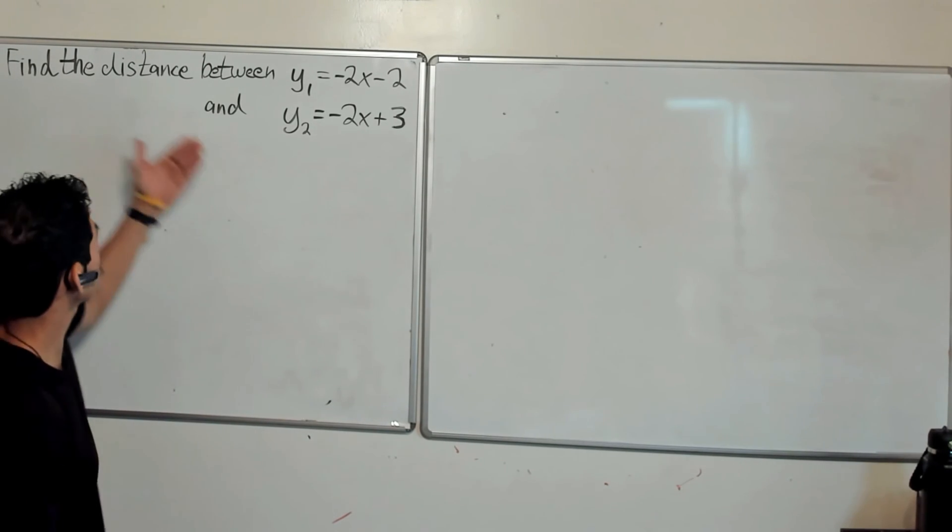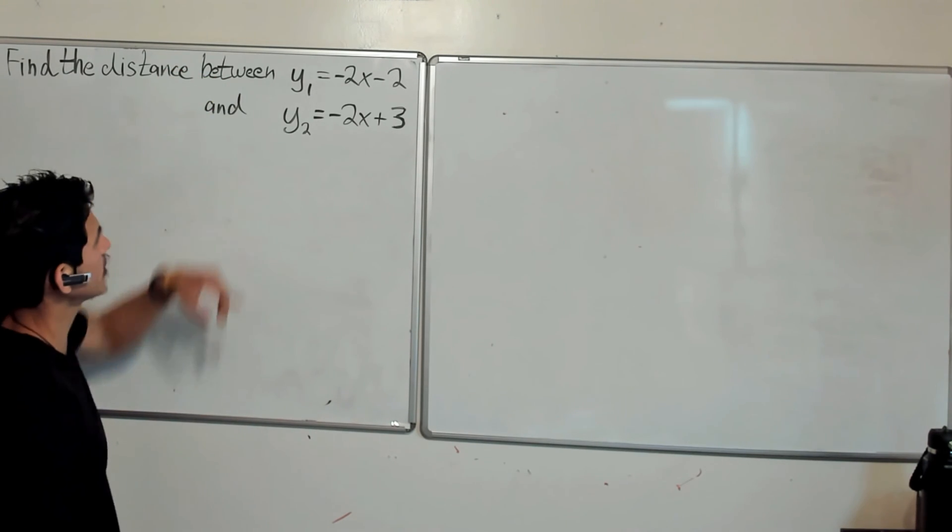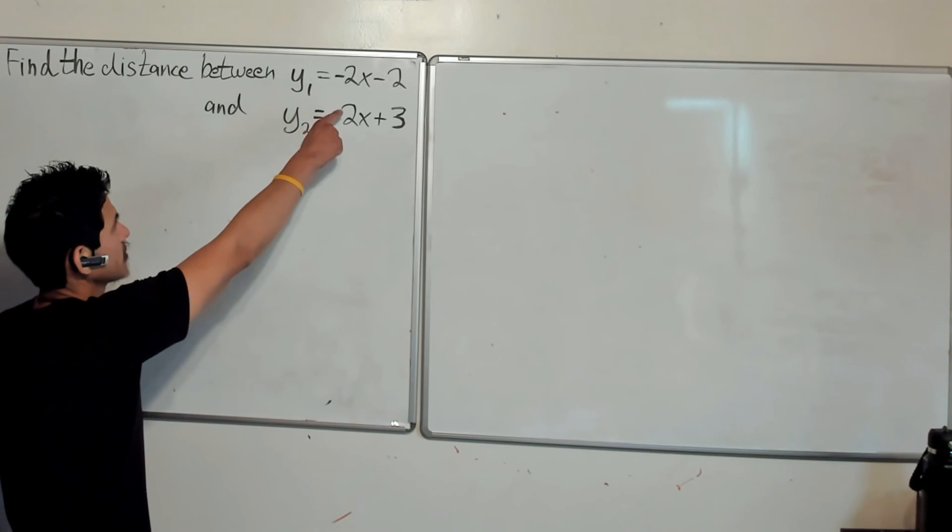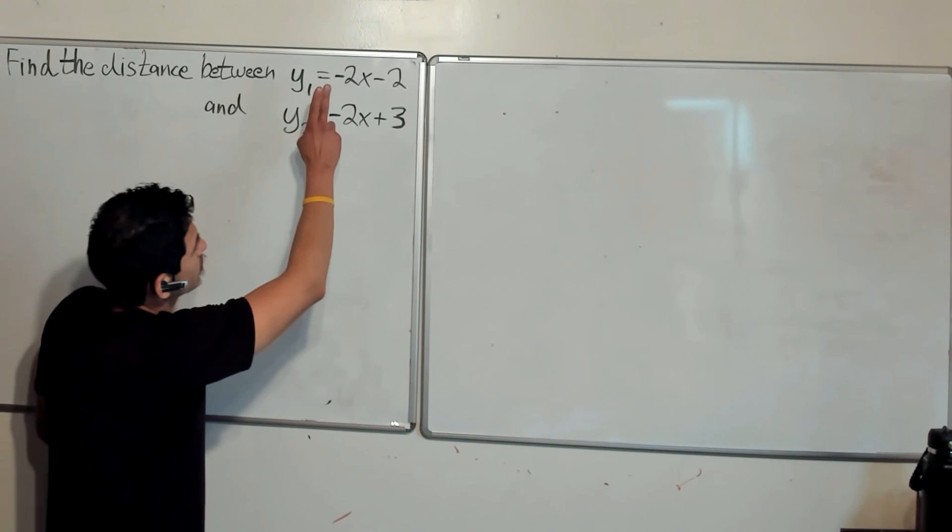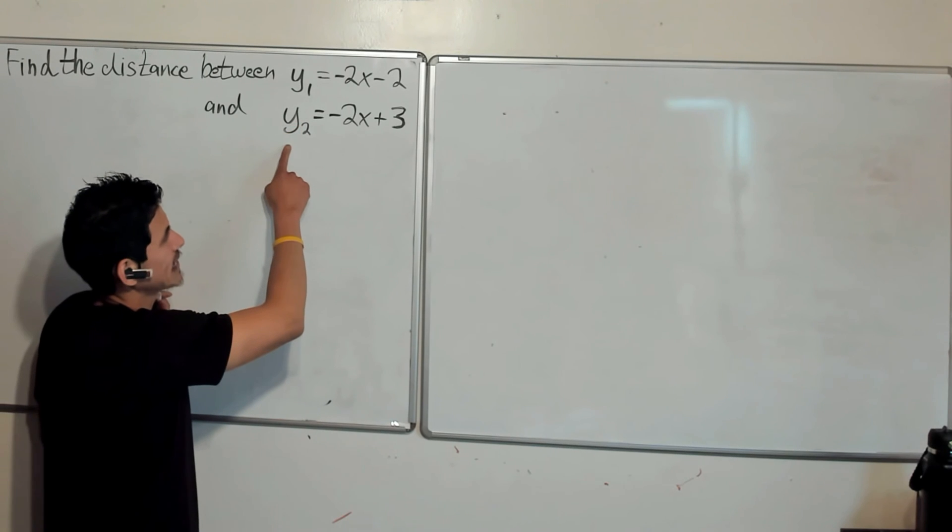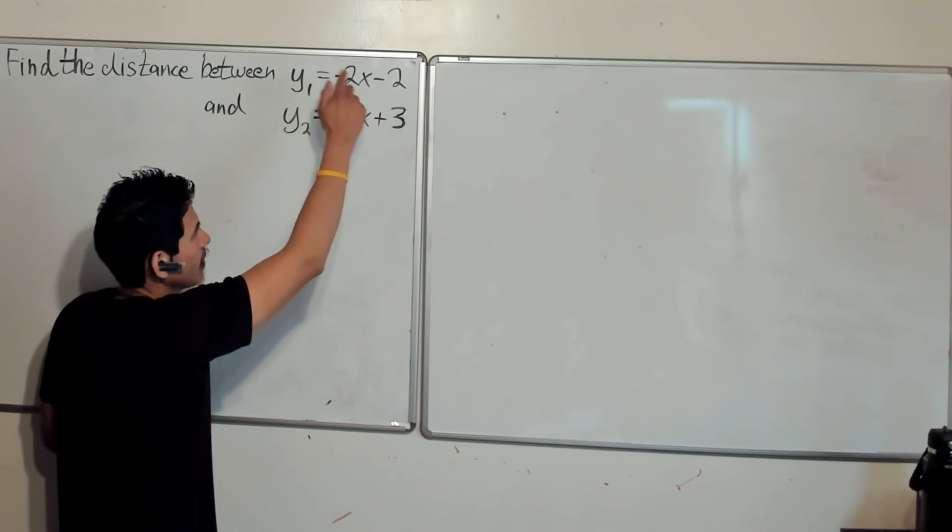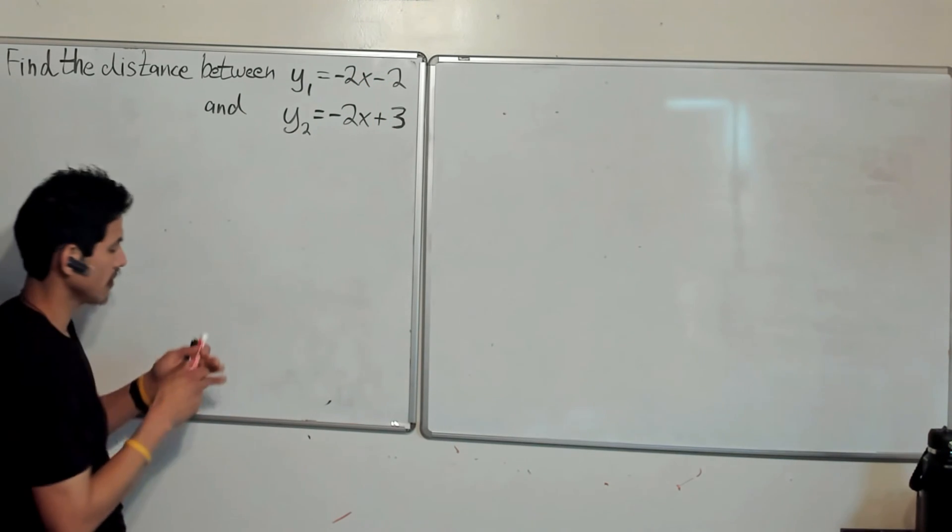Alright, so we're going to do another one of these cool math problems where we're going to find the distance between these two parallel lines. Here we have that one equation y1 is equal to negative 2x minus 2, the other one is y2 equal to negative 2x plus 3. So they're parallel, these have different y-intercepts.